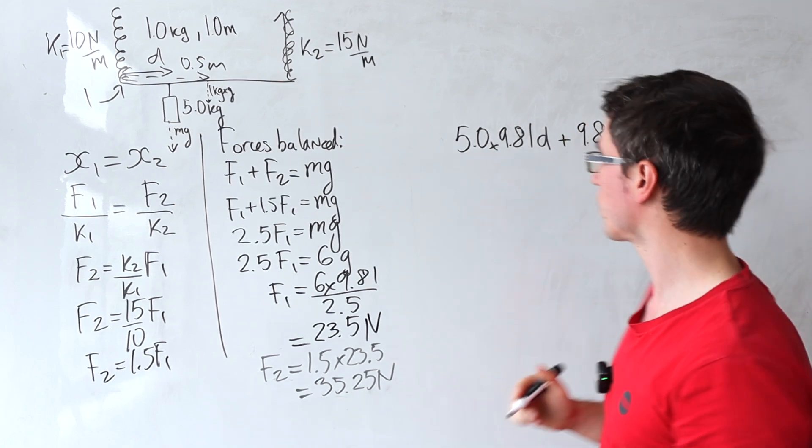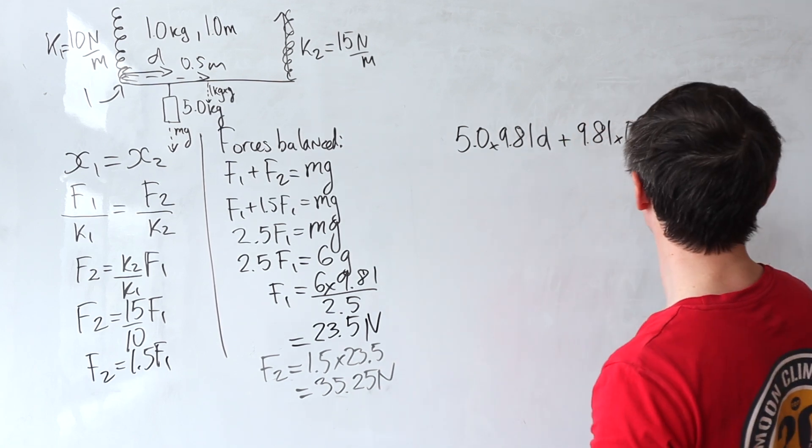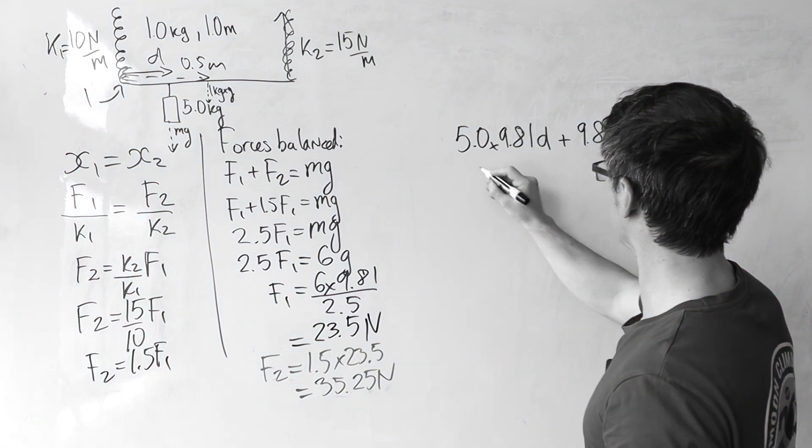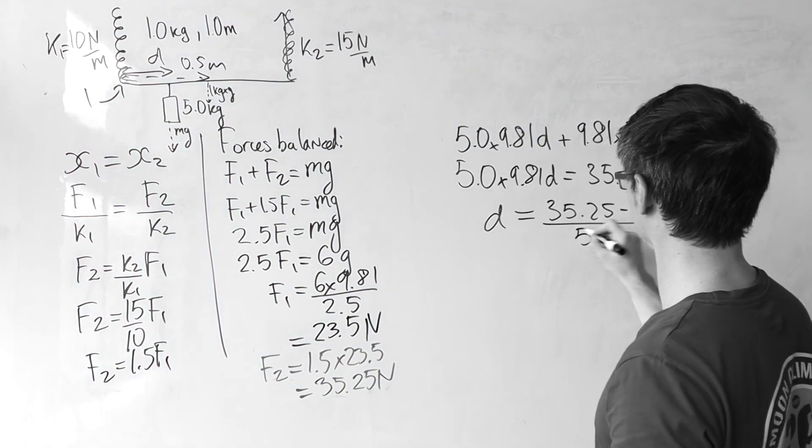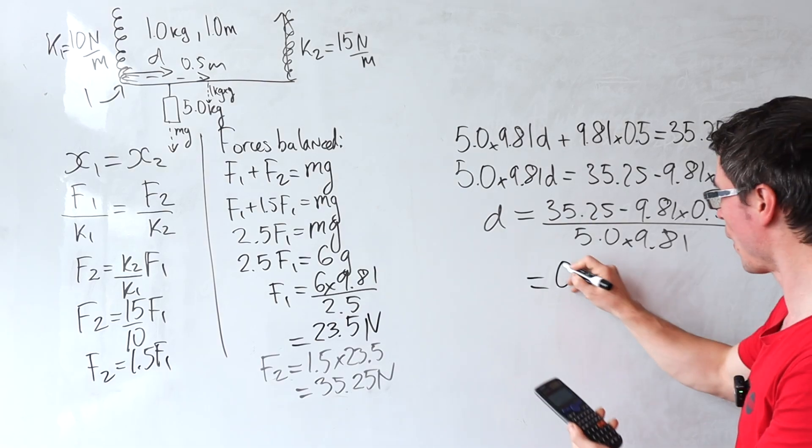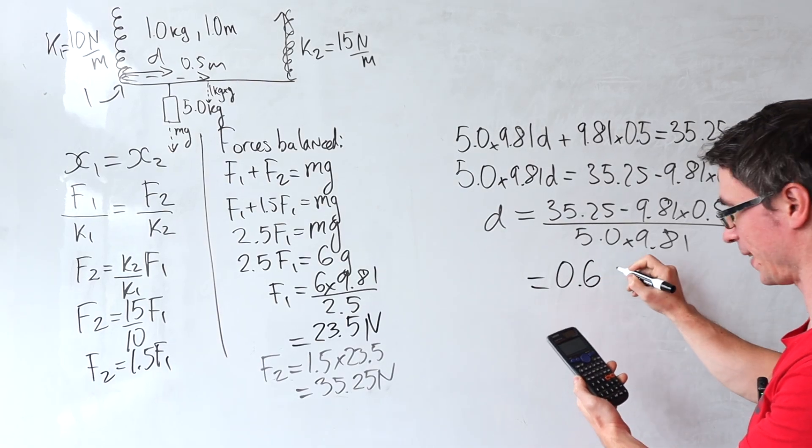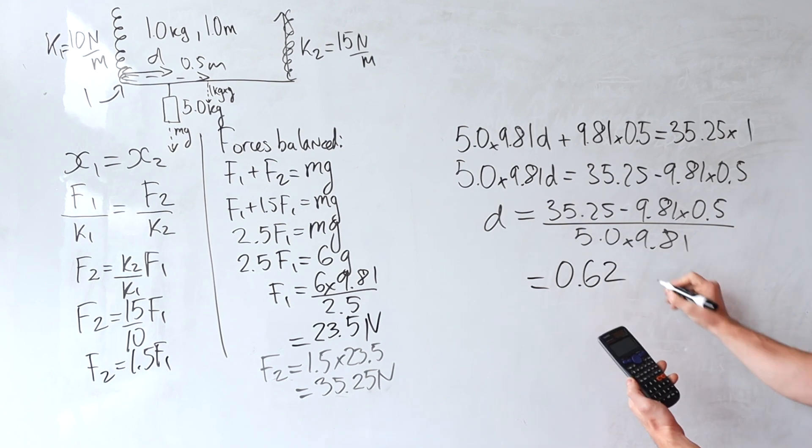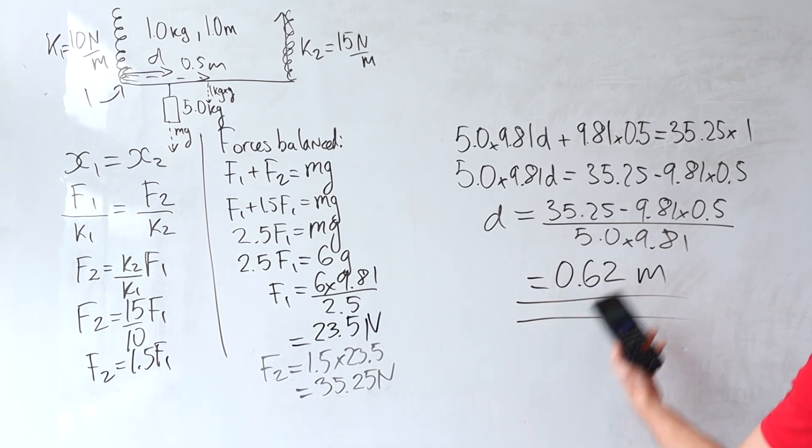Okay, let's rearrange for d. So rearranging for d gives a grand total of 0.6186. Let's call it 0.62 meters.